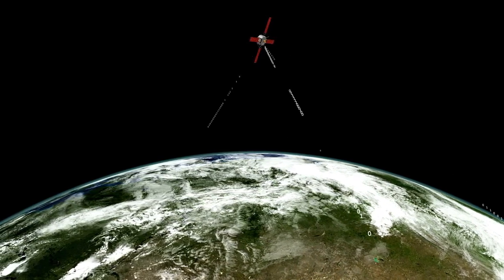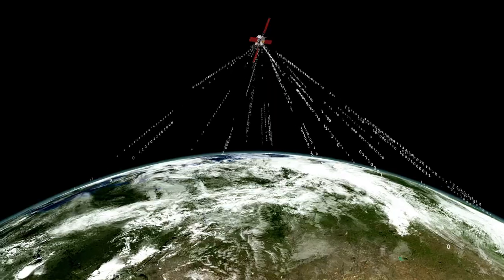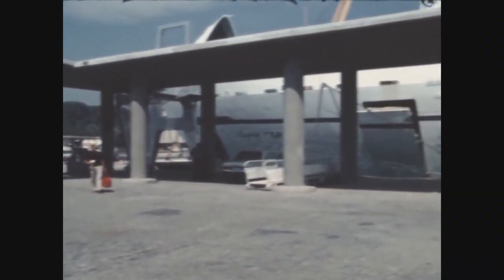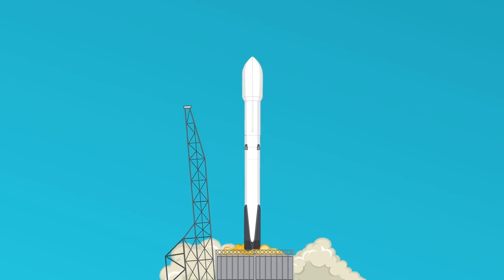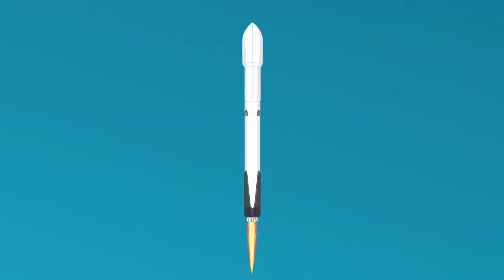The extension of Voyager 2's mission to Uranus and Neptune was equally fruitful. At Uranus, the spacecraft discovered 10 new moons and observed a magnetic field strangely tilted and offset from the planet's center.